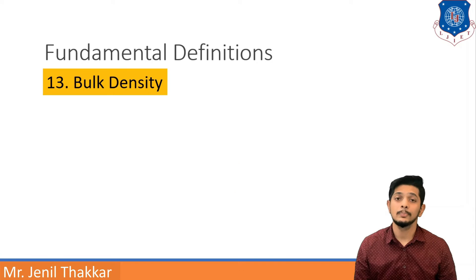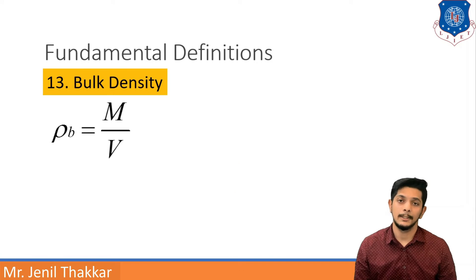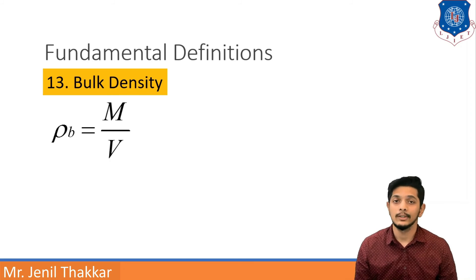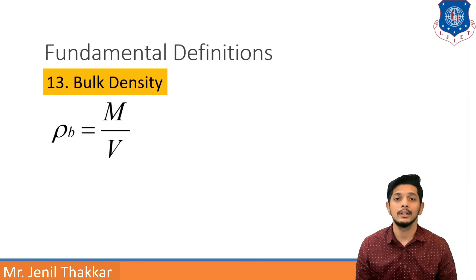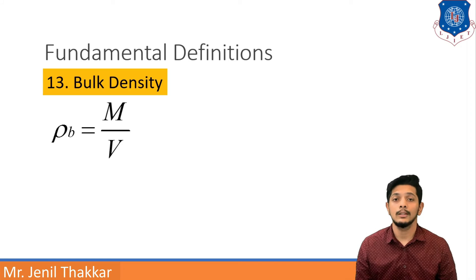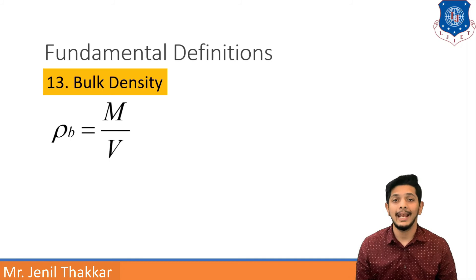The next definition is Bulk Density, denoted as rho B. Rho B equals capital M (total soil mass) upon capital V (total volume). So bulk density is defined as total soil mass divided by total volume. It is generally expressed in units of gram per centimeter cube.